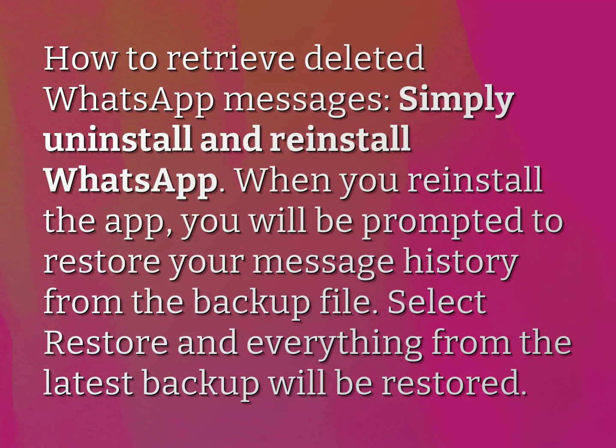Simply uninstall and reinstall WhatsApp. When you reinstall the app, you will be prompted to restore your message history from the backup file. Select Restore and everything from the latest backup will be restored.